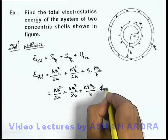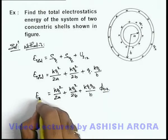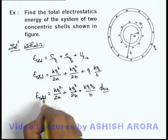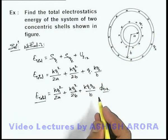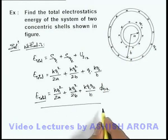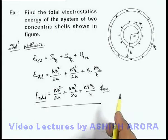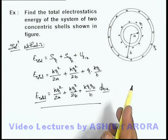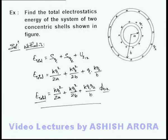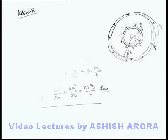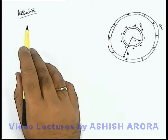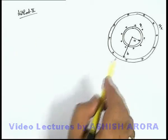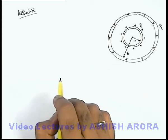That will be the answer to this problem for the total electrostatic energy of the system of these 2 concentric shells. The same result can also be obtained by another method — by finding out the total field energy in the system. Let's continue with Method 2 for calculation of the total energy of this system of concentric shells.